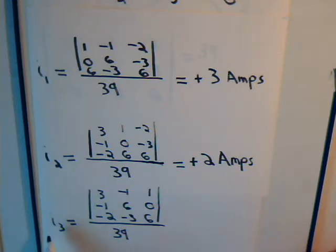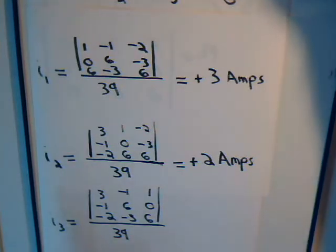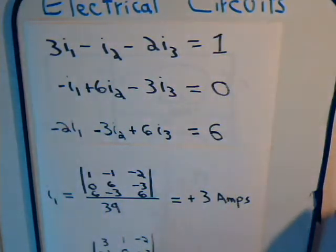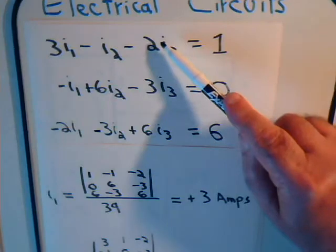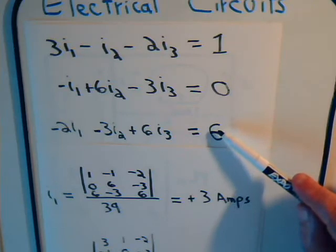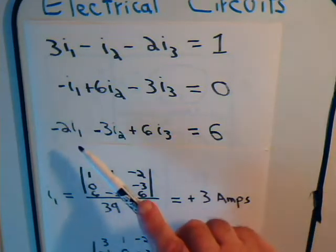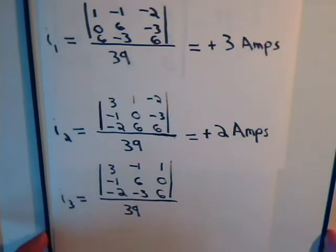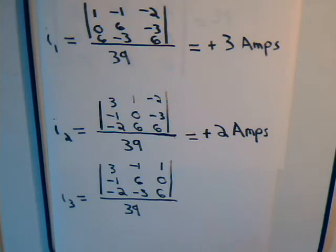We're about to determine the numerical value for current I3. We go back to our original matrix here, these equations essentially. This column of numbers now gets replaced with this column of numbers to determine the numerical value of I3. These two columns are unchanged. Here then is the setup to determine current I3. You see here we have 106, and the first two columns now remain unchanged.